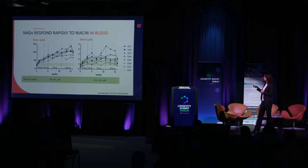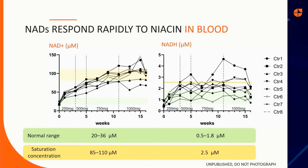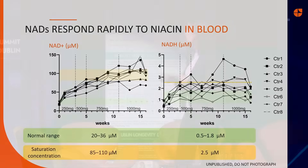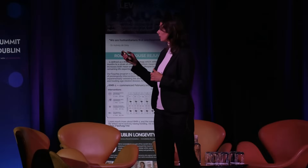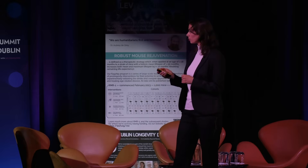The levels increase nicely throughout the time, but interestingly, both metabolites reach a saturation level: for NAD+ it's between 85 and 110 micromolars in blood, and for NADH it's about 2.5 micromolars. So NAD levels do not increase endlessly — they all reach a saturation point.